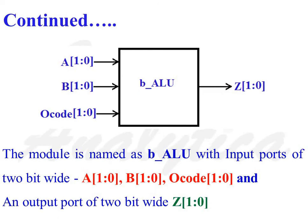This is the external view of the ALU. The module is named B_ALU. The input ports are A, B, and O-Code. The output port is Z. All these are 2-bit wide ports.